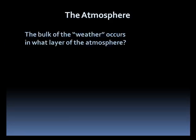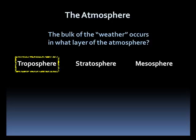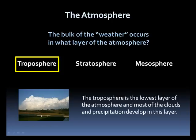Let's see what you remember. The bulk of the weather occurs in what layer of the atmosphere? The troposphere, the stratosphere, or the mesosphere? If you said troposphere, you are correct. The troposphere is the lowest layer in the atmosphere and is where most of the clouds and precipitation develop.